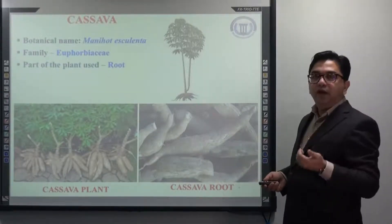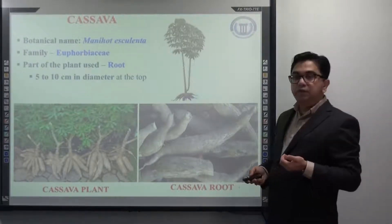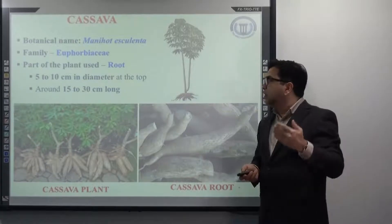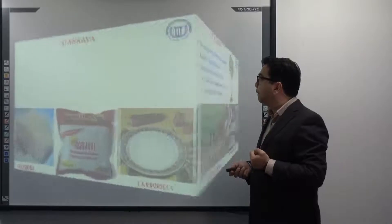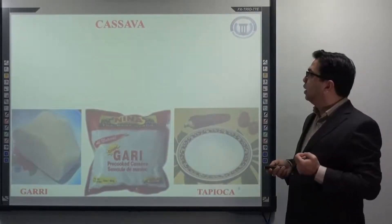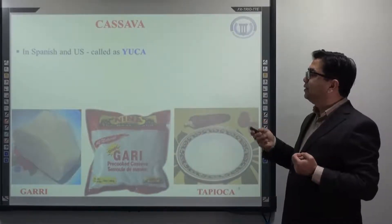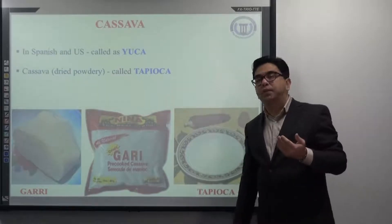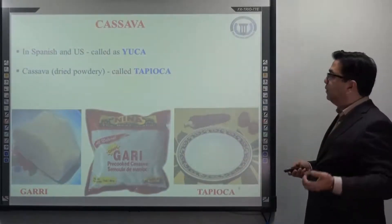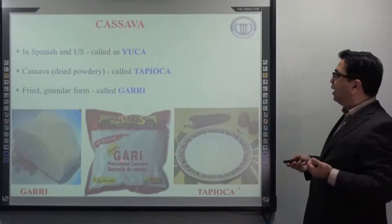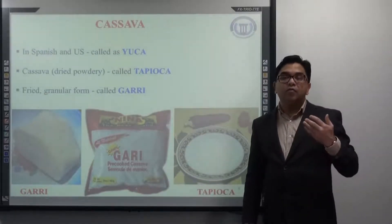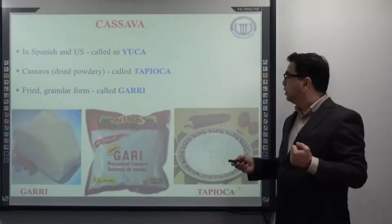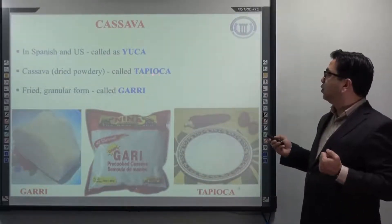The part of the plant used is the root. Regarding the shape of the root, it is 5 to 10 cm in diameter at the top and around 15 to 30 cm long. Cassava root products are mainly known in Spanish and the US as yucca. The cassava dried powdery form is commonly called tapioca. It is also known as gari, which is the fried and granular form of the cassava root, available as flour or cake in the market.